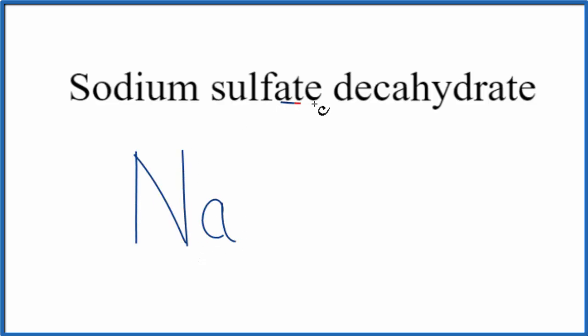For sulfate, this -ate ending means we have a polyatomic ion. We won't find that on the periodic table. We've either memorized that it's SO4 2-, or if we're allowed, we look that up. So sulfate is SO4 2-.